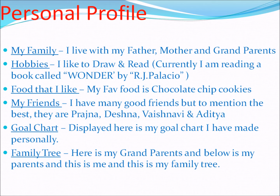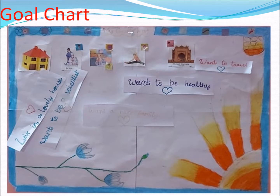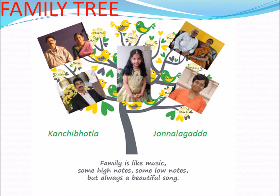Now I am going to show you my goal chart and my family tree. This is my goal chart. I would like to live in a lovely and beautiful house. I would really love to be a scientist. Want to be healthy. Want to travel all around the world. Want a nice family. This is my family tree — here are my grandparents, below are my parents, and in the middle, that's me.